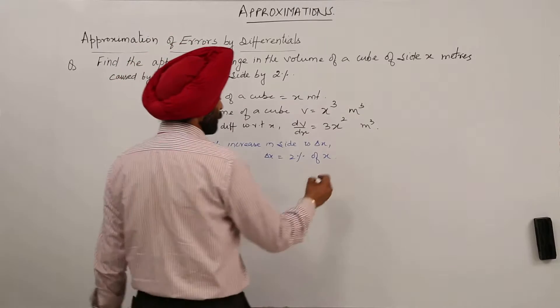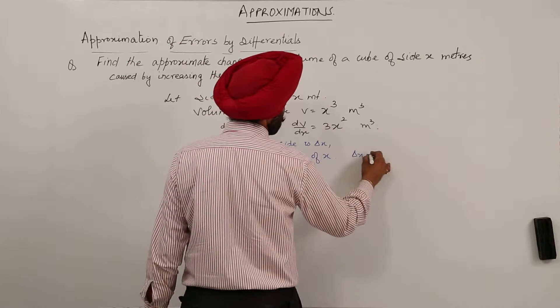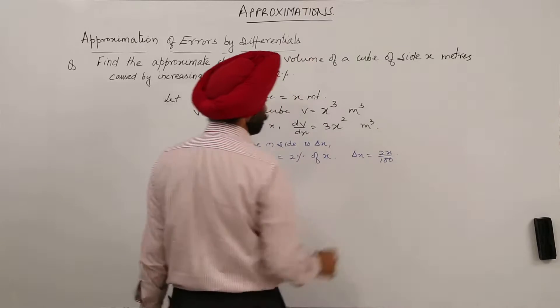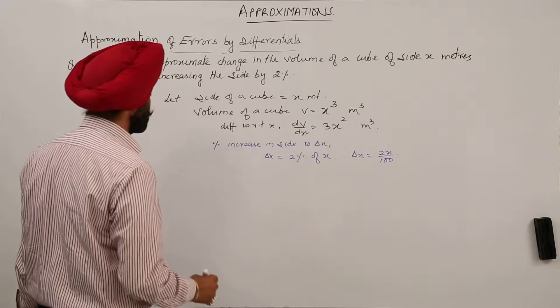Okay, so delta x is equal to 2x upon 100. This is delta x. Now,